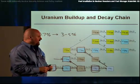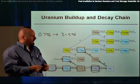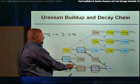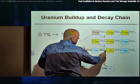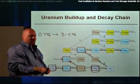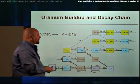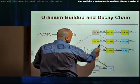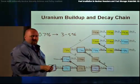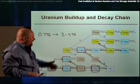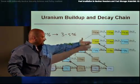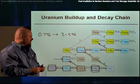Plutonium-239, if it continues to be irradiated in a reactor, would produce the higher-mass plutonium isotopes of plutonium-240, plutonium-241, and plutonium-242. Of those isotopes, plutonium-241 could beta decay to americium-241, which could continue the chain. So, as we continue to irradiate a fuel in a reactor, we would expect to see some of these other isotopes get produced.